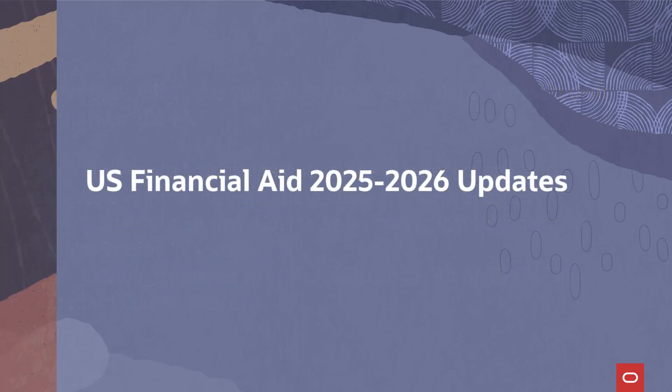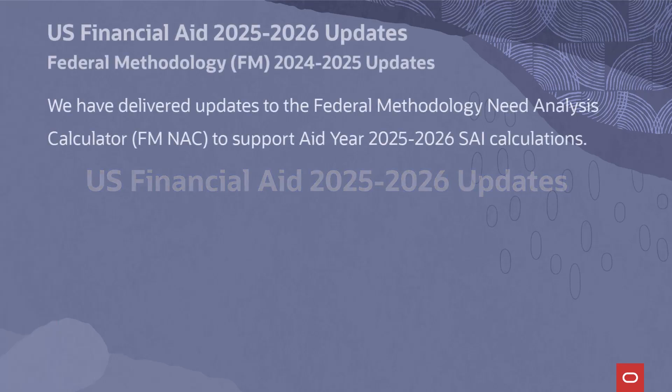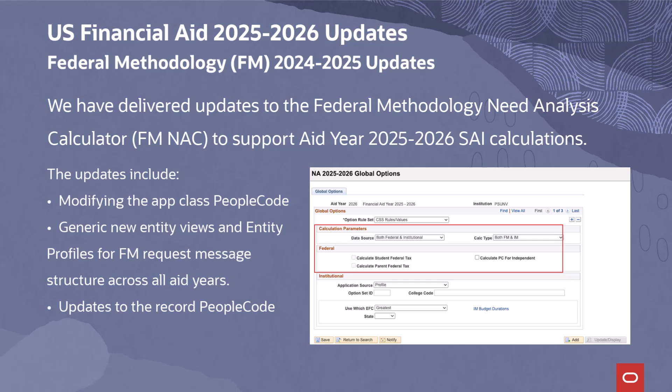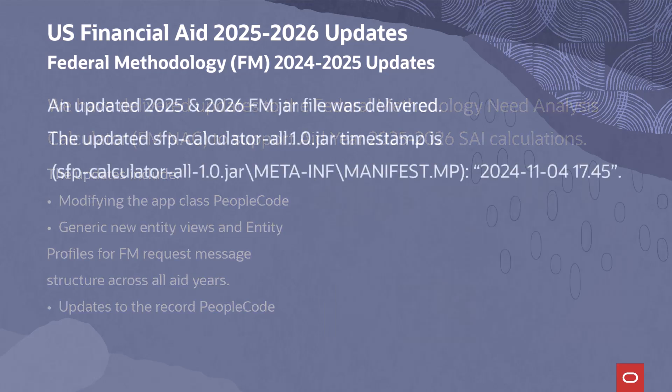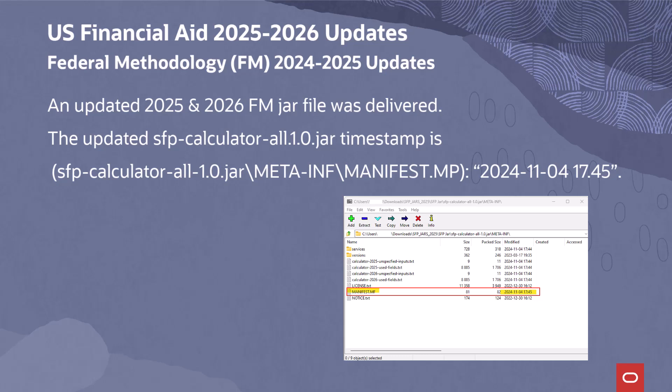We have delivered updates to the Federal Methodology Need Analysis Calculator to support Aid Year 2025-2026 SAI calculations. The updates include modifying the app class PeopleCode to account for Aid Year 2025-2026 changes, creating generic new entity views and entity profiles to support the FM request message structure across all aid years, and updates to the record PeopleCode to support Aid Year 2025-2026. An updated 2025-2026 FM JAR file was delivered; the updated SFP Calculator All 1.0 JAR timestamp is 2024-11-04-17-45.